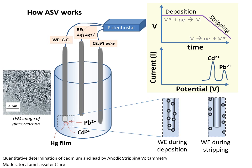You'll start by polishing the glassy carbon electrode to make sure that it is as clean, shiny, and flat as possible. Then before you actually do the experiment, you'll plate a thin film of mercury onto the electrode. The sample cup, before it actually contains your sample, will contain a solution of a fairly high concentration of mercury. You apply a large negative potential to the working electrode for a few minutes to reduce the mercury onto it, producing a thin coating of mercury that you then use for the rest of the experiment.